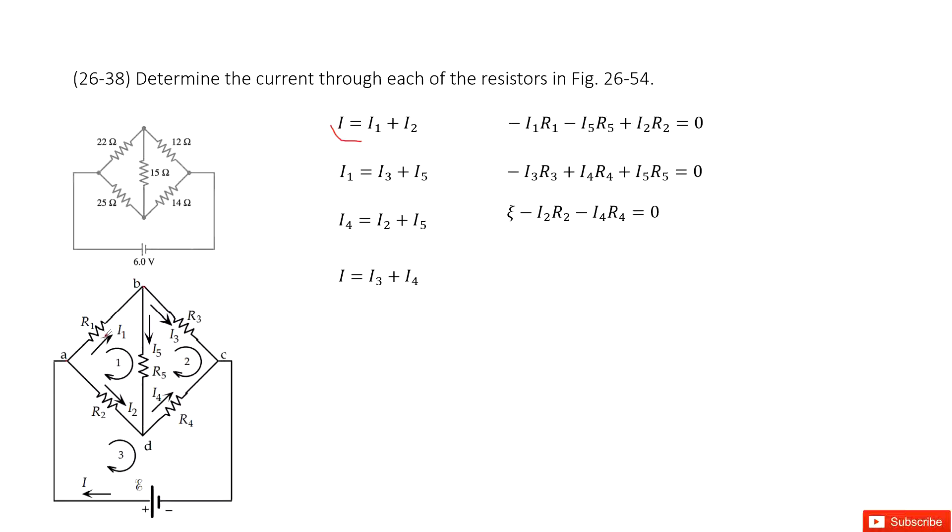And then the position B, the current flows in I1, flows out I3 plus I5. Then look at point D. The current flows in I2 and I5, flows out is I4. So I4 equals I2 plus I5.